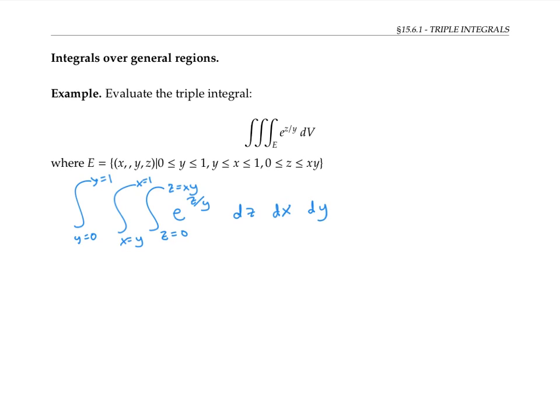Now that we've set up this integral as an iterated integral, let's do some computation. The integral of e to the z over y with respect to z is going to be just e to the z over y times y, which you can check by taking the derivative of this expression with respect to z and using the chain rule. Now I need to evaluate that between my bounds of integration.